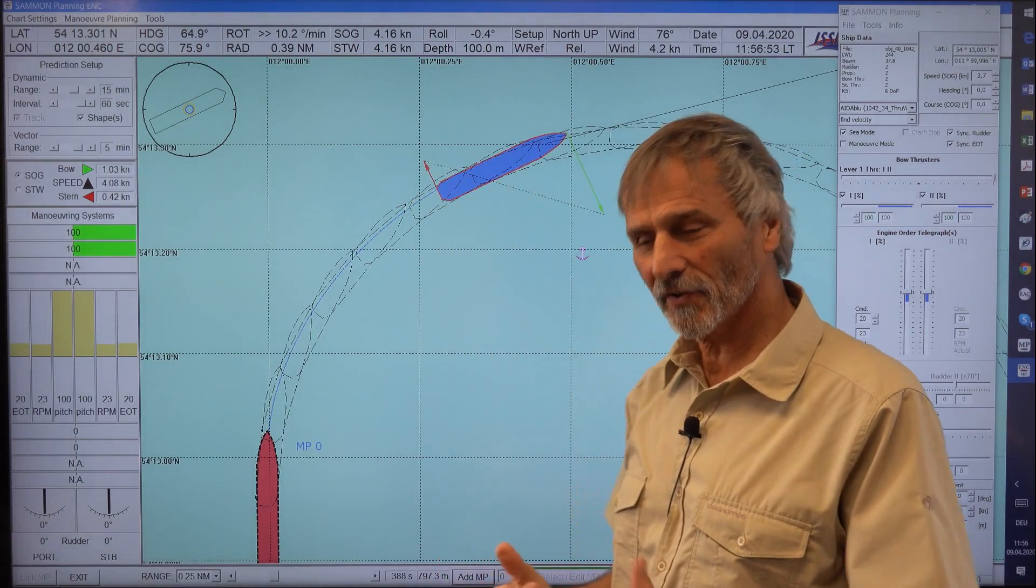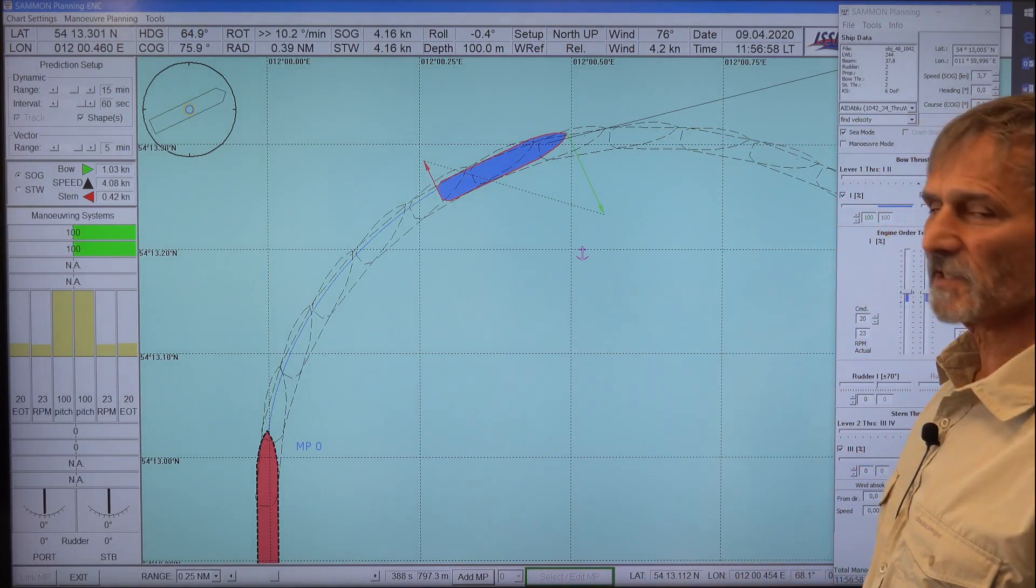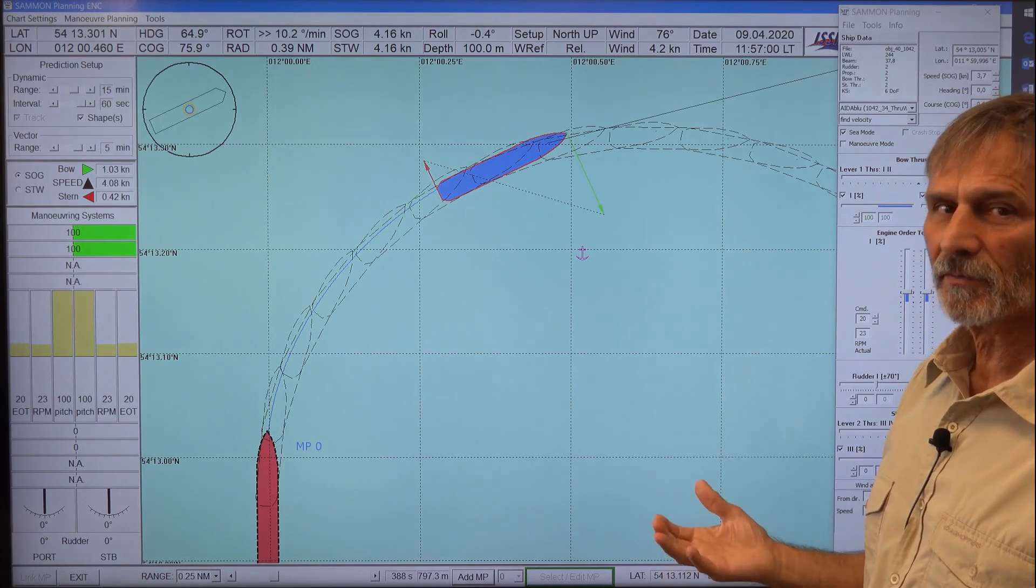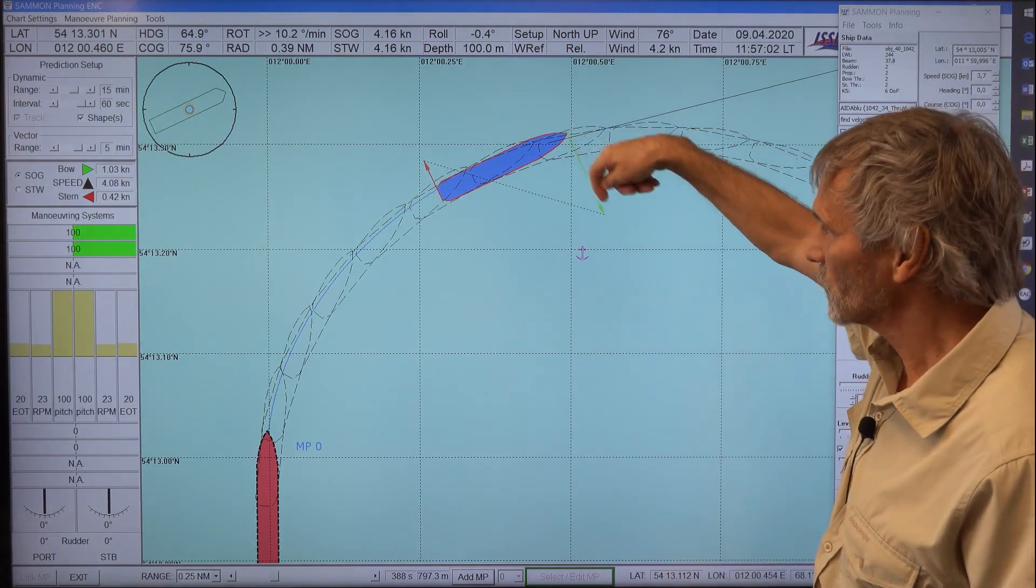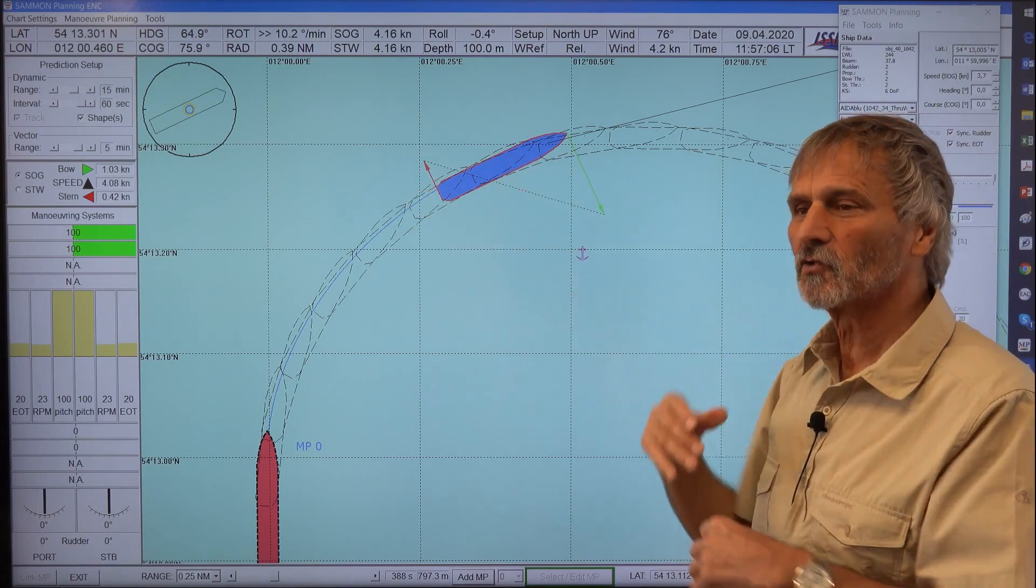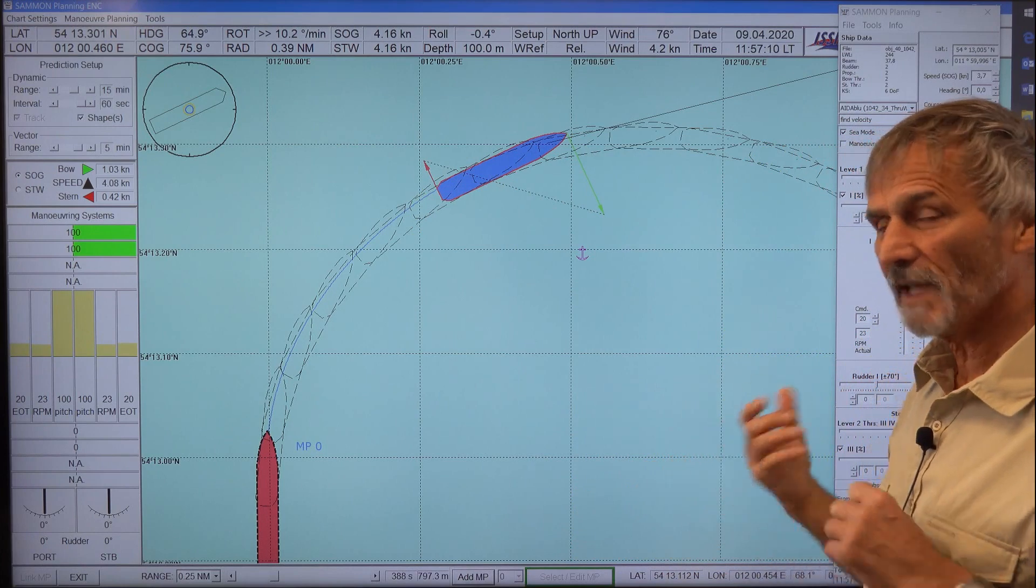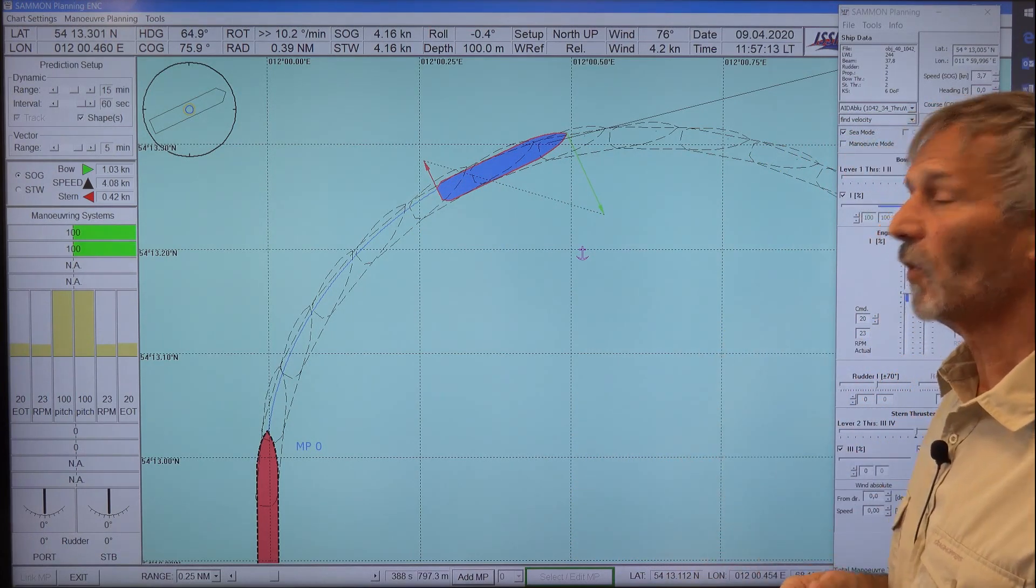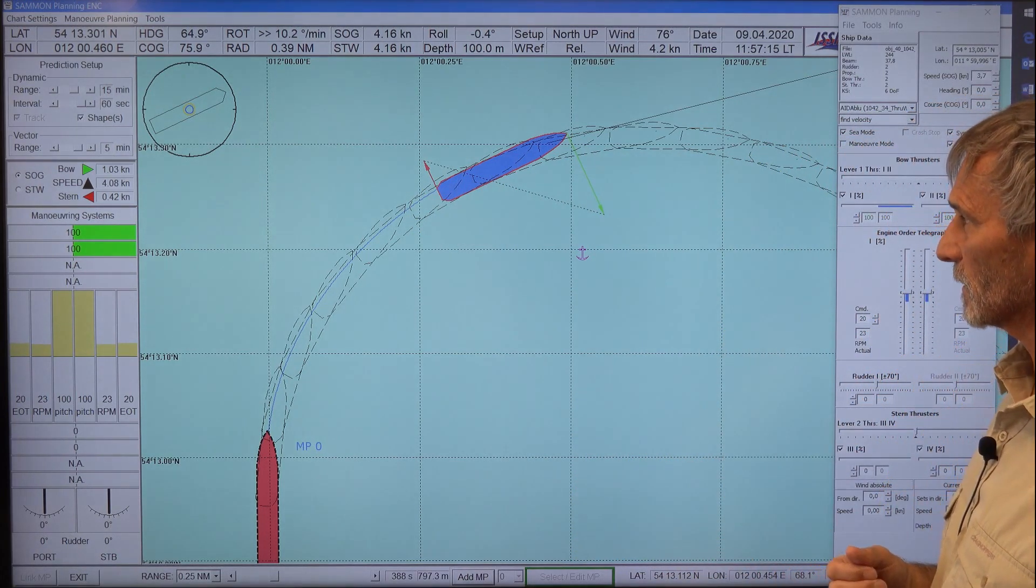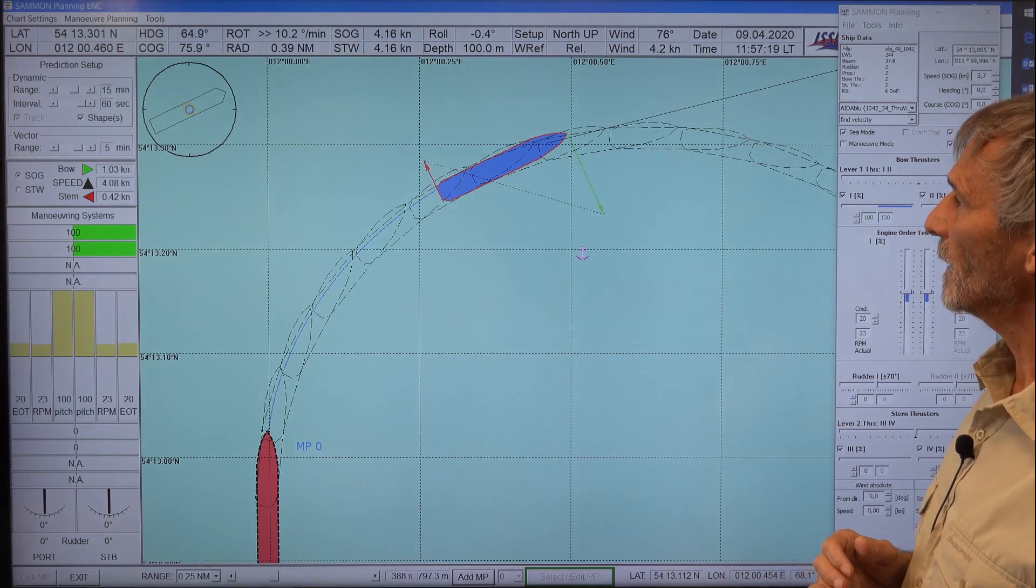So instead of a drift to the inside, which we had before, it's pointing outside. This has something to do with the equilibrium. So if you have a force which is really pointing into the turning circle, then there must be other forces due to centrifugal forces and the damping forces which are opposing this force. I will explain it later.